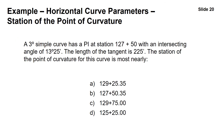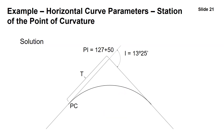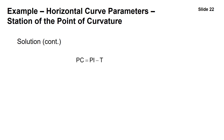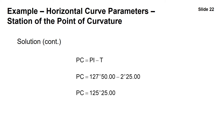With the same information, we find the point of curvature. Using PC equals PI minus T, we subtract the tangent length from the PI: 127+50 minus 2+25 gives us a PC of 125+25 — answer D.